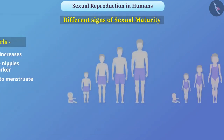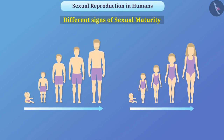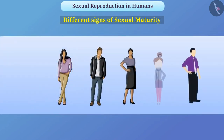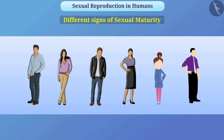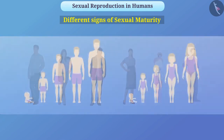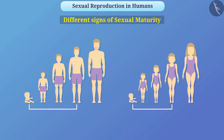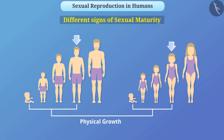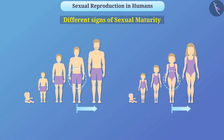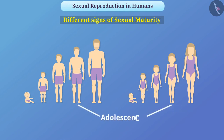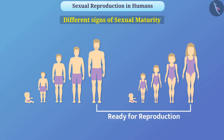Keep in mind that these changes occur slowly over time. All these changes may occur at different ages in different individuals. It is not necessary that all changes occur in a person at the same time. From birth to adolescence, the body primarily focuses on physical growth, but as the rate of physical growth slows down in the early years of adolescence, the reproductive tissue begins to develop. This period of adolescence is called puberty. Males and females become ready for reproduction after sexual maturity.